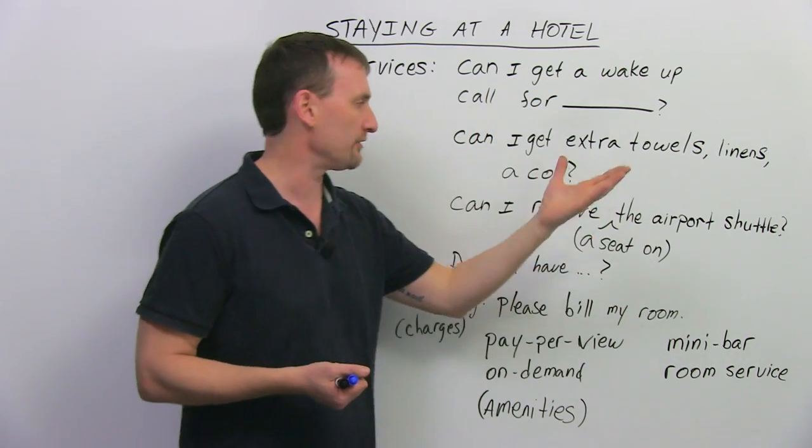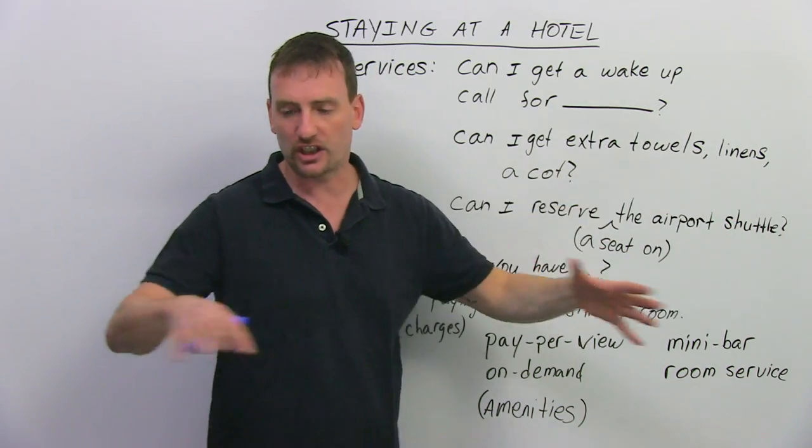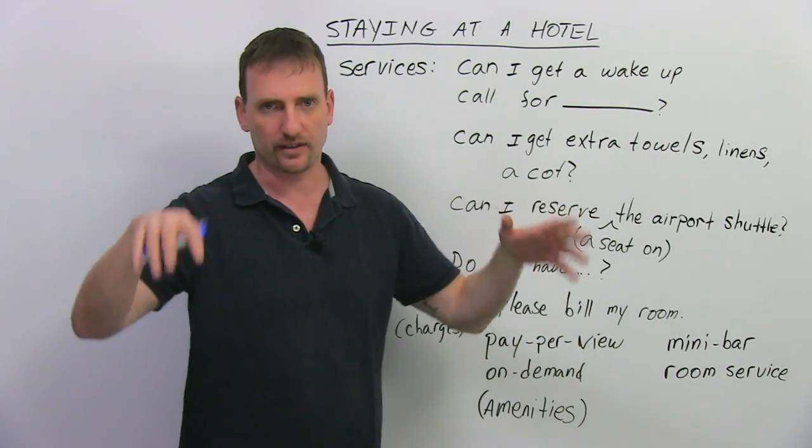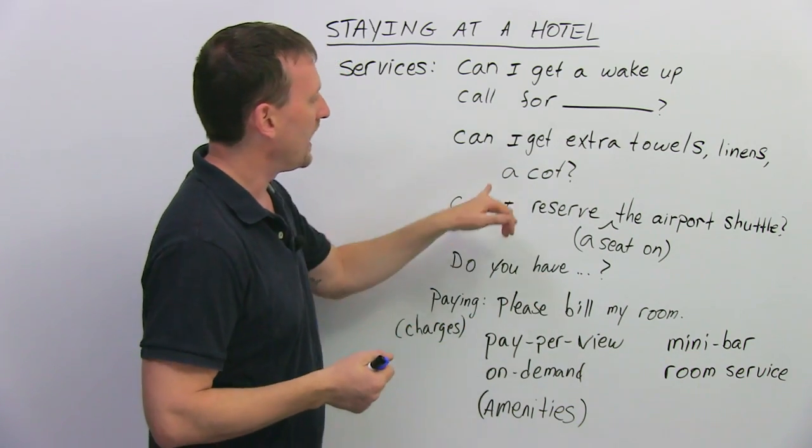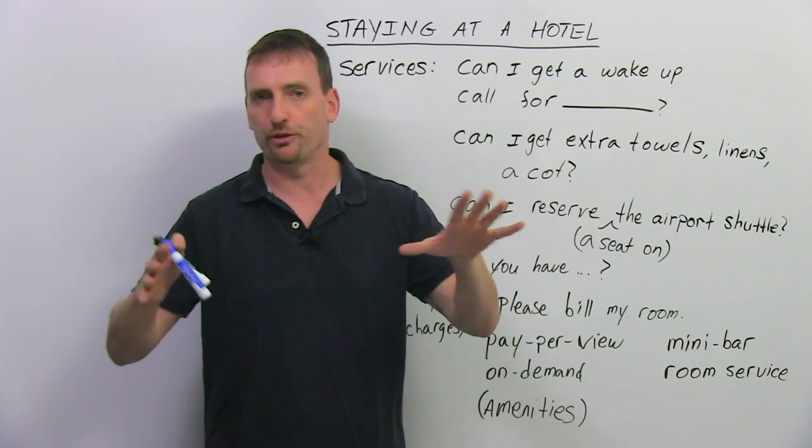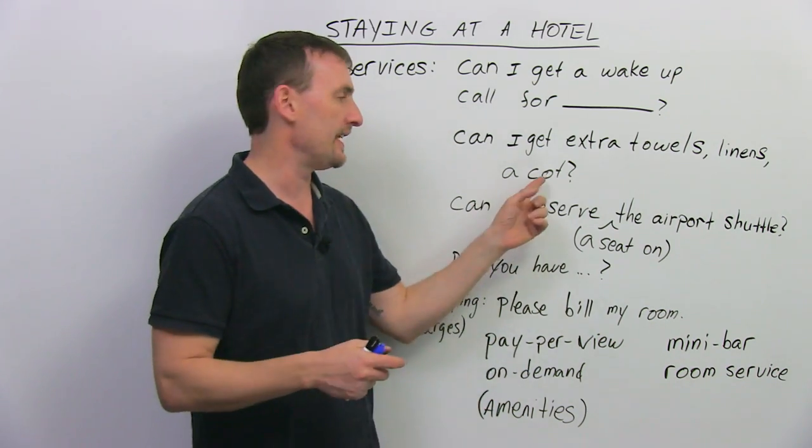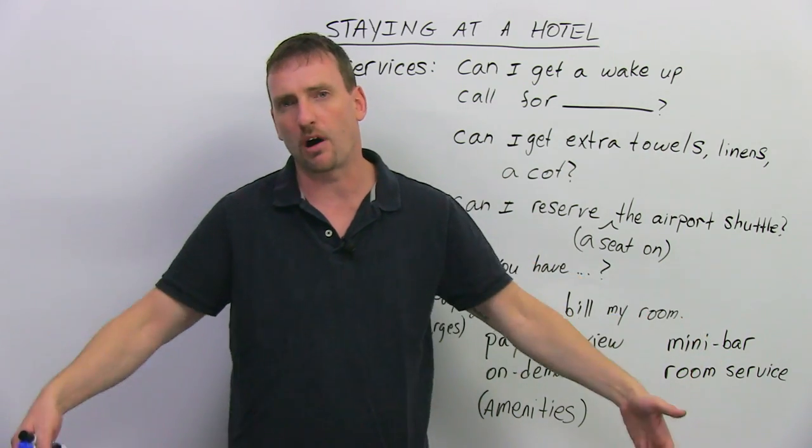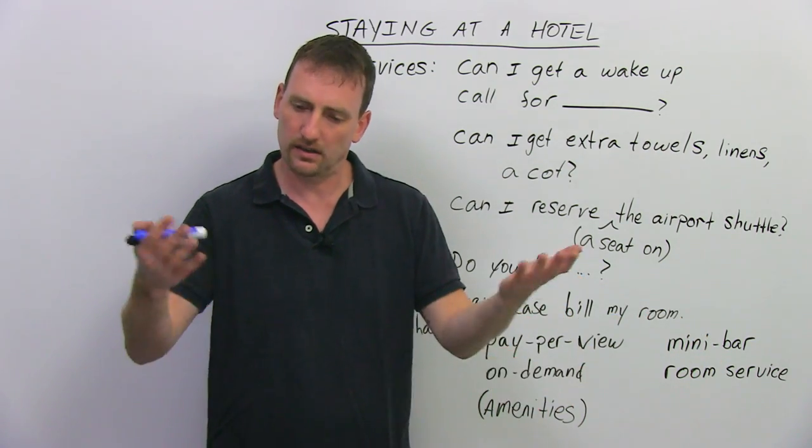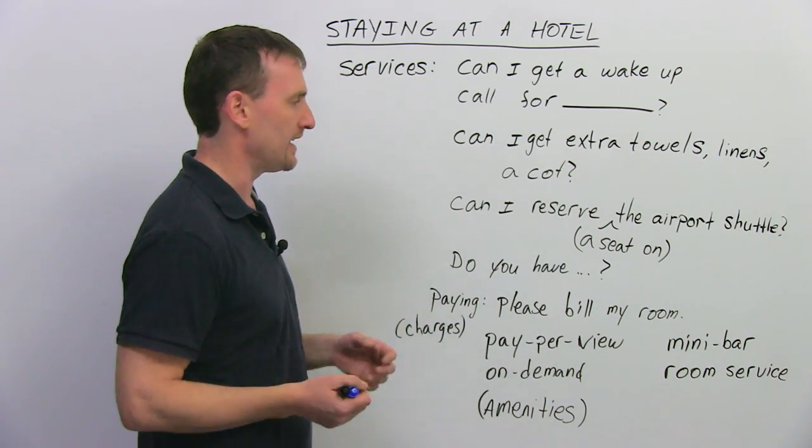Can I get extra towels, extra linens, extra cot? Extra towels, very clear. Linens: sheet, pillowcase, things for the bed, basically. A cot. If you have too many people, let's say your room has two beds, but you're five people. So two, two, and you need an extra cot, which is basically a small bed that they fold up, it's on wheels. They can bring it to you, one person can sleep there on the side.